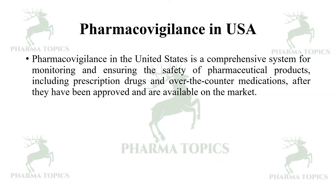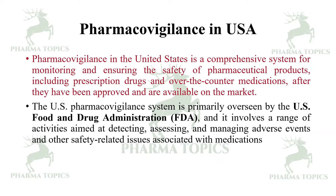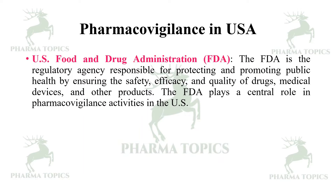Pharmacovigilance in the US is a comprehensive system for monitoring and ensuring the safety of pharmaceutical products, including prescription drugs and over-the-counter medications, after they have been approved and made available in the market. The US pharmacovigilance system is primarily overseen by the US Food and Drug Administration (FDA), and involves a range of activities aimed at detecting and managing adverse events and other safety-related issues. The FDA is responsible for protecting and promoting public health by ensuring the safety, efficacy, and quality of drugs, medical devices, and other products.